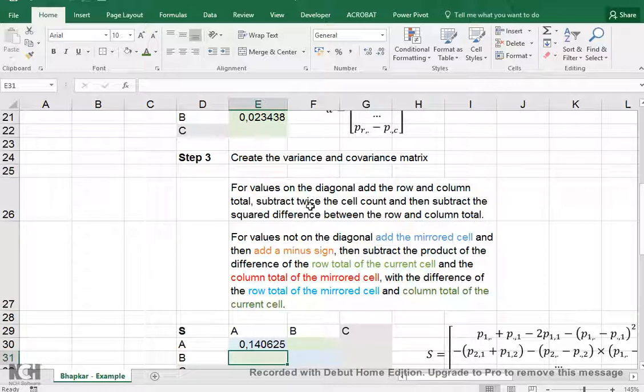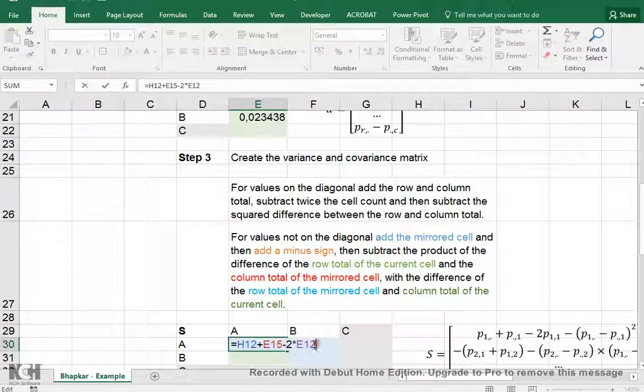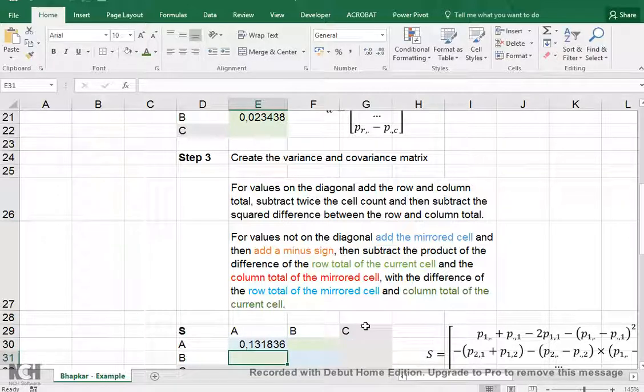And then subtract twice the square difference between the row and column total. So those two values, again, that we also used here, but now actually, Ctrl-C, minus, and then between parenthesis, but it's not the addition now, it's the subtraction, so minus, and then use squared. And that gives us the first value.